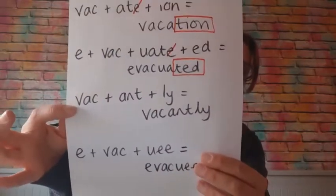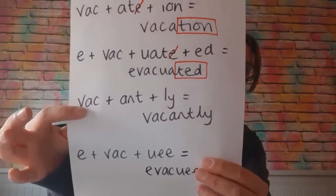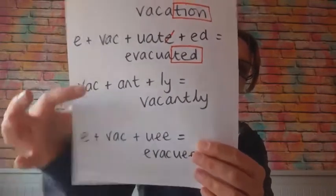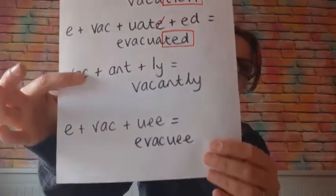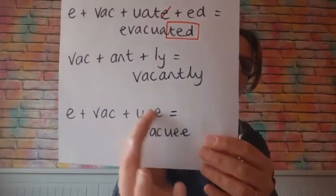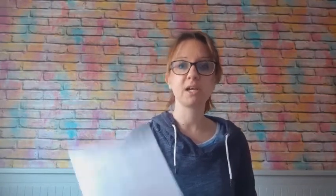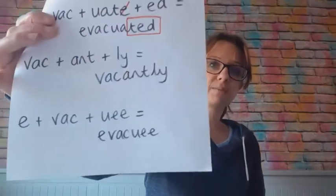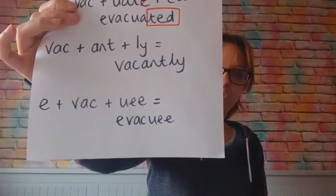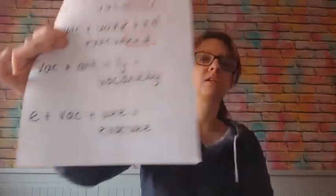'Vacantly' — if we do something emptily, it's 'vacantly'. That's the adverb with the L-Y. And then we've got 'evacuee' — with that double E on the end, which tends to refer to the person that is doing it or having it done to them. An evacuee is somebody that is being evacuated, it's happening to them — like an employee is somebody that is being employed. An evacuee is somebody that is being evacuated.